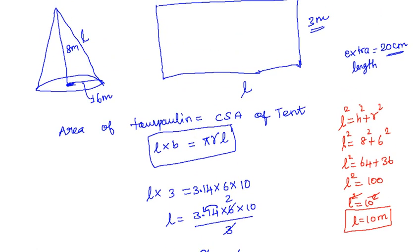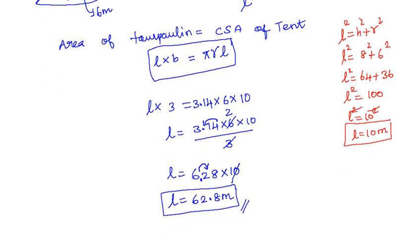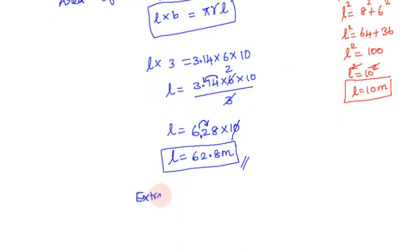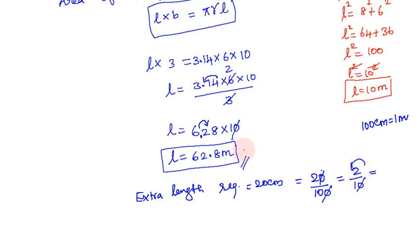In the tent making, extra 20 cm is required for stitching. Extra length is required. Converting cm to meters: 20 divided by 100 equals 0.2 meters.